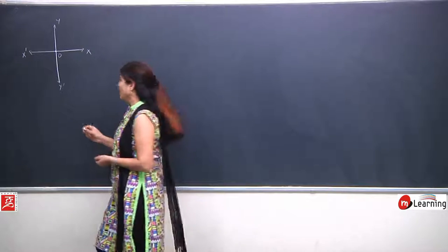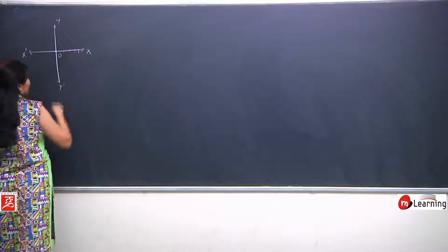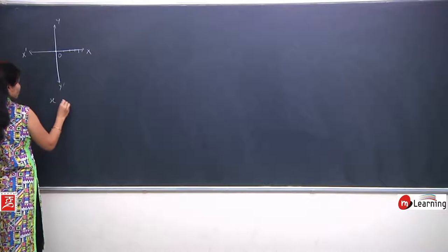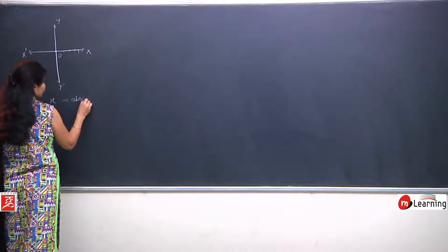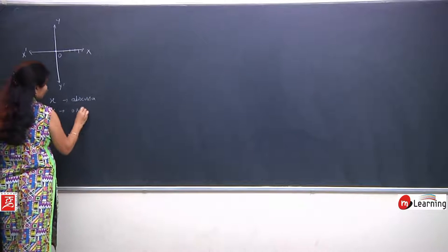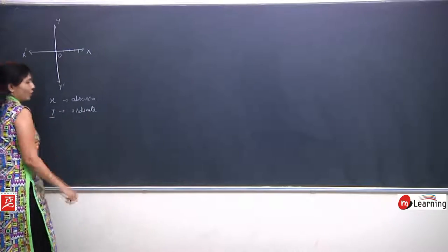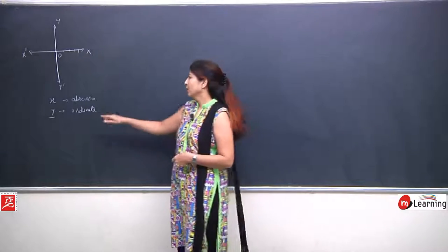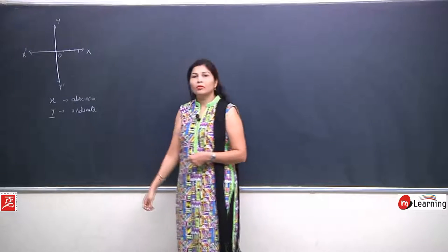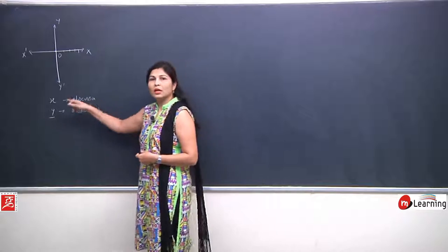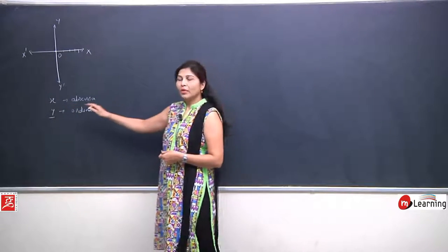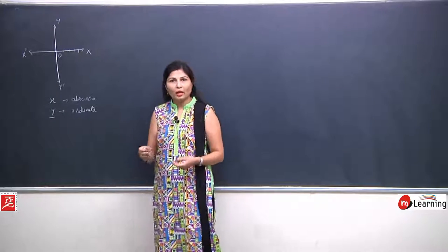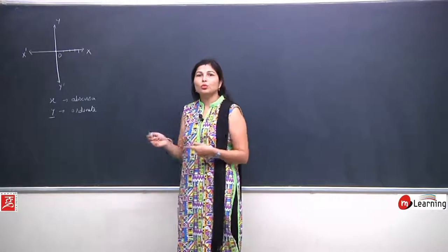Jab hum points ko plot karenge ya kuch bhi question solve karenge, toh hum inki labeling karenge. X coordinate ko hum abscissa bolenge and y coordinate ka naaya naam ordinate bhi hota hai. We can use either 'y coordinate' or 'ordinate'. Ordinate word jab bhi kahi aaye, toh hume click hona chahiye ki they are talking about y coordinate, and if there is the word abscissa, then immediately click hona chahiye ki they are talking about x coordinate.